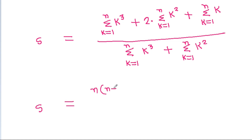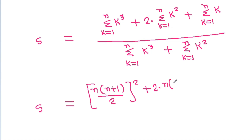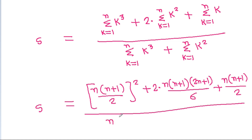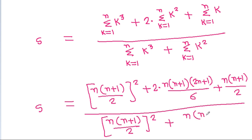Applying standard formulas: summation of k cubed from k=1 to n equals [n(n+1)/2] squared; summation of k squared from k=1 to n equals n(n+1)(2n+1)/6; and summation of k from k=1 to n equals n(n+1)/2. The denominator uses summation of k cubed as [n(n+1)/2] squared plus summation of k squared as n(n+1)(2n+1)/6.